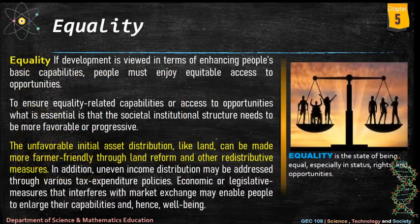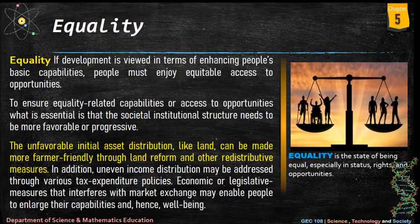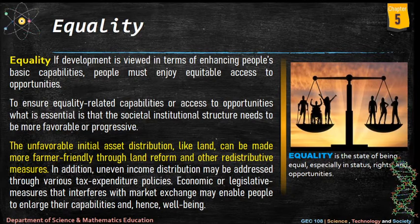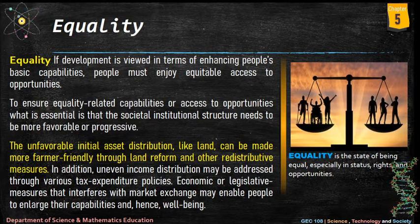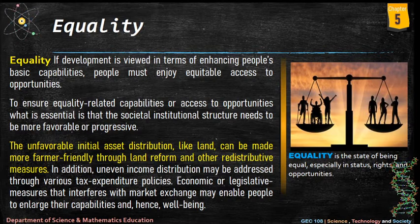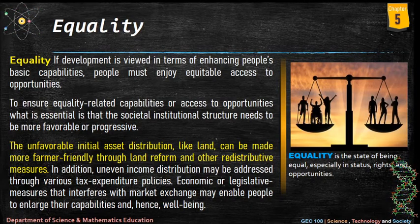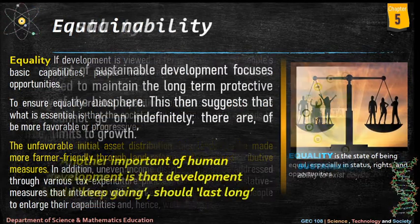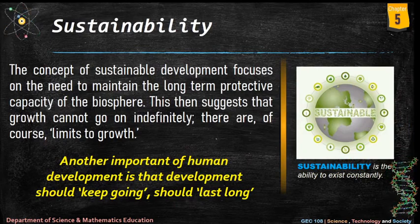Equality: if development is viewed in terms of enhancing people's basic capabilities, people must enjoy equitable access to opportunities. What is essential is that the societal and institutional structure needs to be more favorable or progressive. The unfavorable initial asset distribution, like land, can be made more farmer-friendly through land reform and redistributive measures. Uneven income distribution may be addressed through tax and expenditure policies. Economic or legislative measures that interface with market exchange may enable people to enlarge their capabilities and well-being.